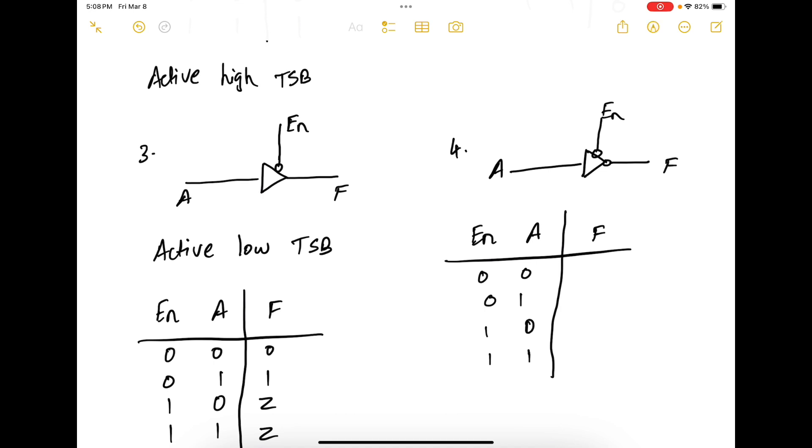So we know that it's an active low tri-state buffer. So when enable is 1, you get a high impedance state. And when enable is 0, F is NOT of A.